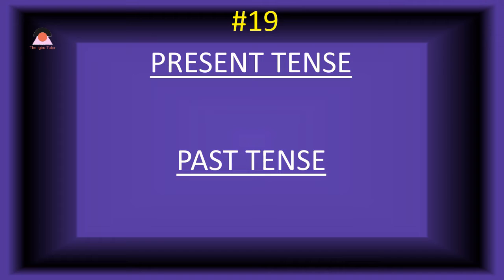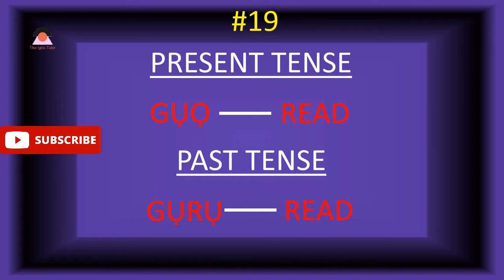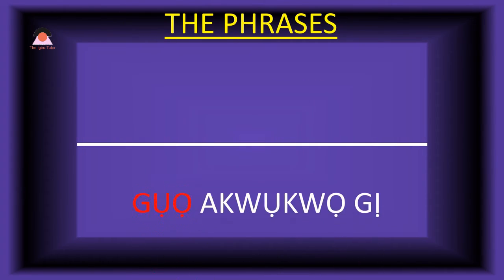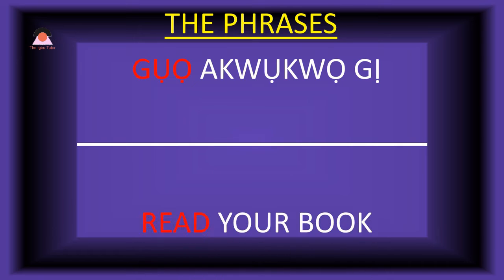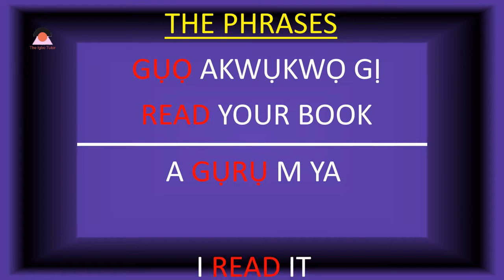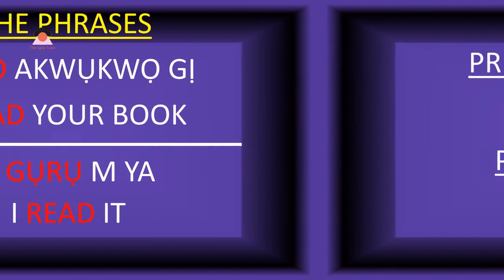Word number nineteen: 'gwa,' which means 'read.' The past tense of gwa is 'goro,' also meaning 'read.' Note that 'read' and 'read' are the same spelling but different pronunciation. Present tense phrase: 'goo akuko ge' — read your book. Past tense: 'a-goro miya' — I read it.